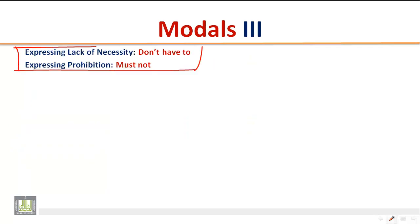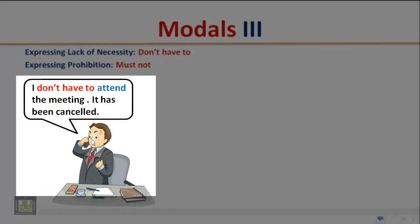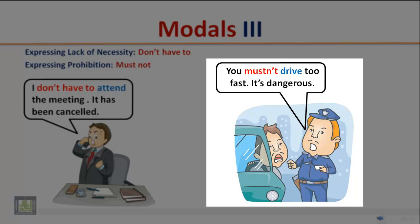Expressing lack of necessity: 'don't have to'. Expressing prohibition: 'must not'. Listen to the following conversation and pay attention to the modal auxiliary. 'I don't have to attend the meeting — it has been cancelled.' 'You mustn't drive too fast; it is dangerous.'